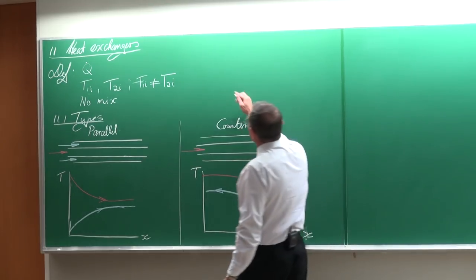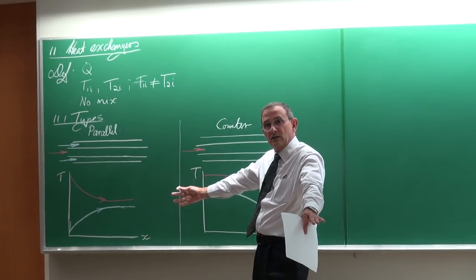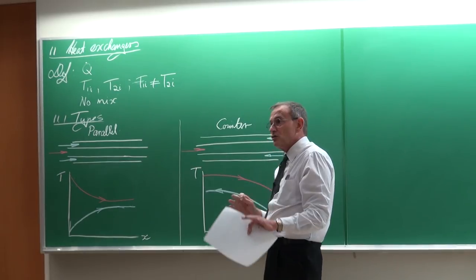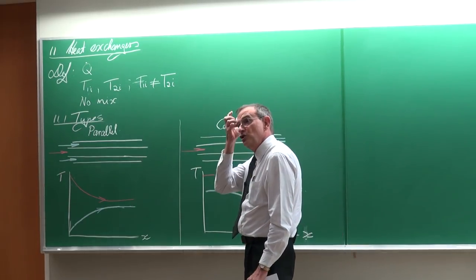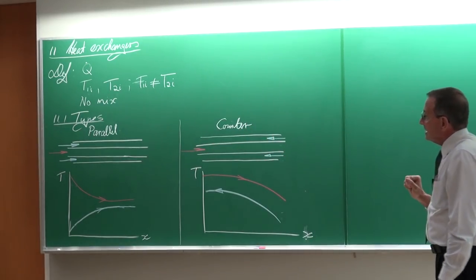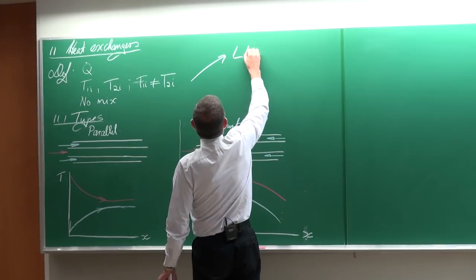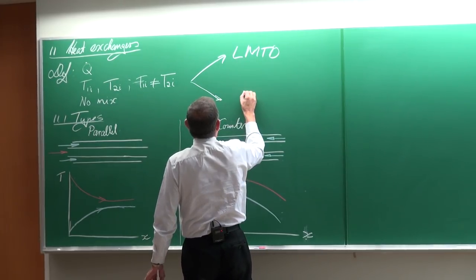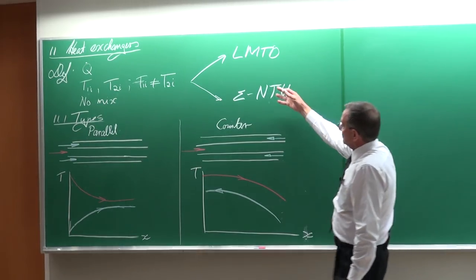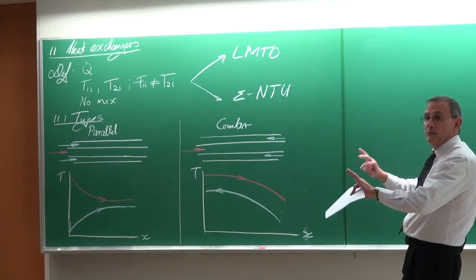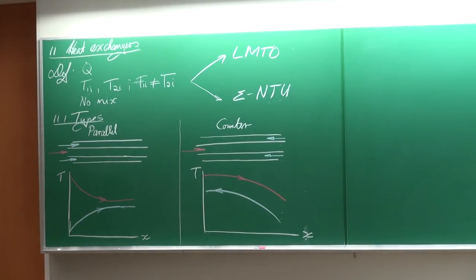In this chapter we will do an introduction looking at different types of heat exchangers and the mathematical approach for heat transfer rate. There are two approaches to solve heat transfer in heat exchangers: the first is the LMTD approach and the second is the effectiveness-NTU approach. Today we cover types and the mathematical approach; the next lecture covers LMTD, and the one after that covers the effectiveness-NTU approach.